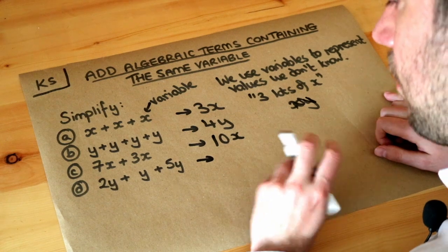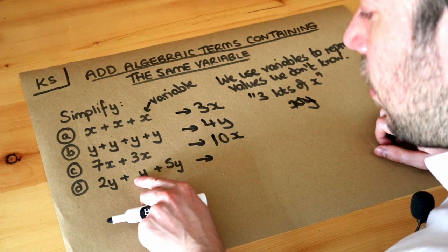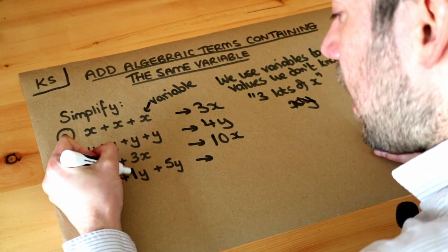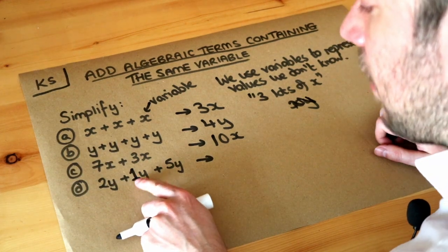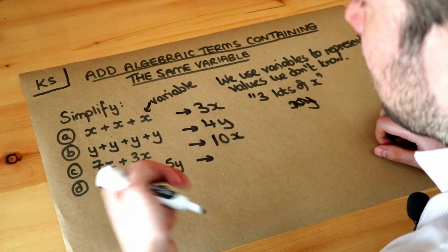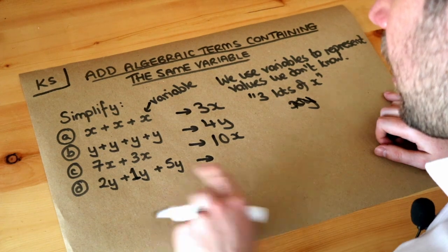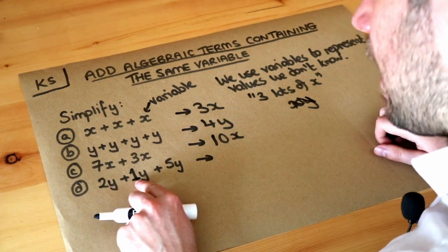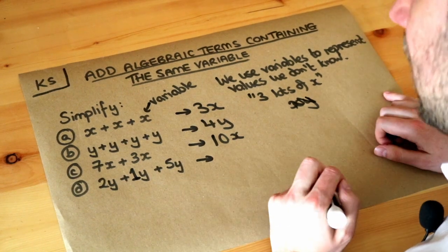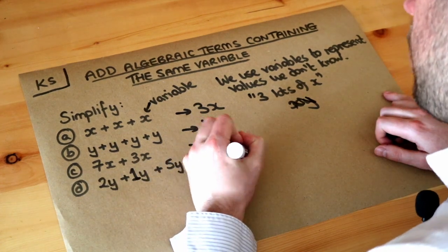And then finally this one we've got two lots of y. We're adding one lot of y. There's no number on the front of it, it's just a lot of y. So we could if we wanted to put a little one on the front because y on its own just means one lot of y. If I said I've got a bunch of grapes that's the same as saying I've got one bunch of grapes. So we can put a one on the front to say we've got one of it. Now we've got two lots of y, we're adding one lot of y and then we're adding another five lots of y. How many lots of y do we have in total? Well two plus one plus five is eight. So we've got eight lots of y.